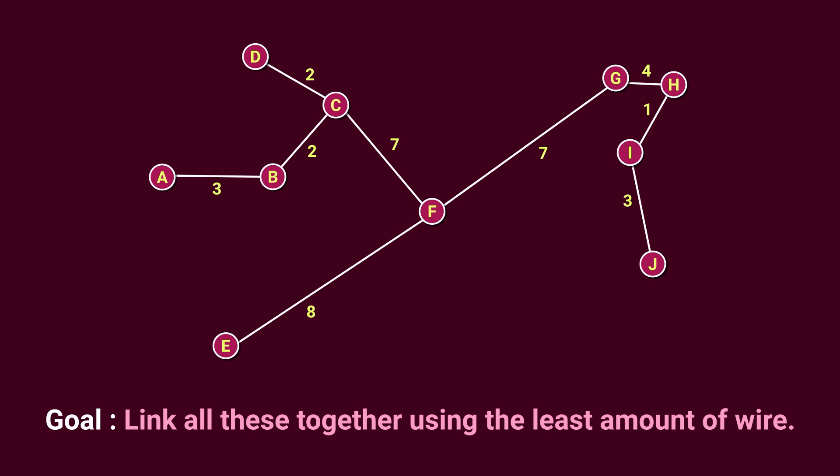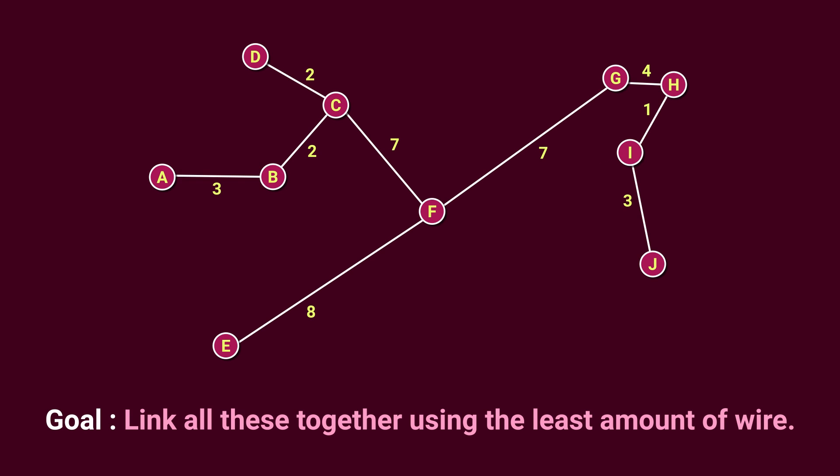This is just one example in discrete math, or more specifically combinatorial optimization, where there's a finite number of possibilities. And in a sense, these are very easy, because we could, in this case, just find every single spanning tree and then pick the smallest one.